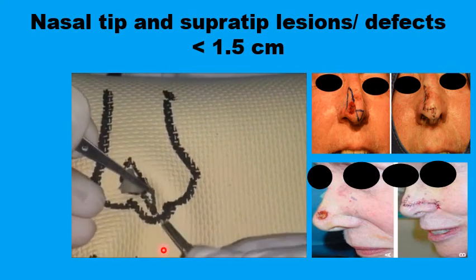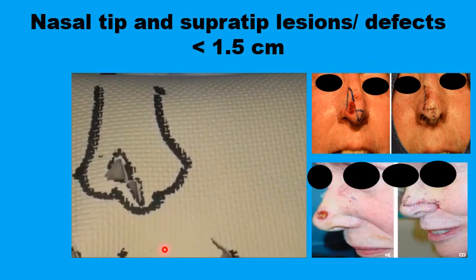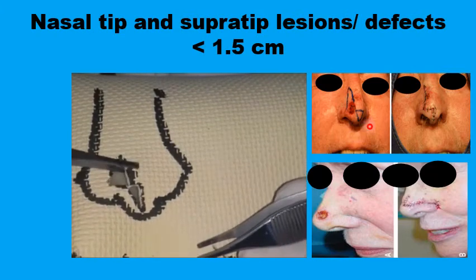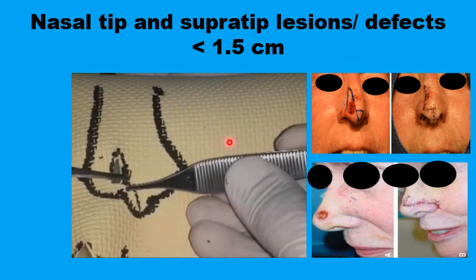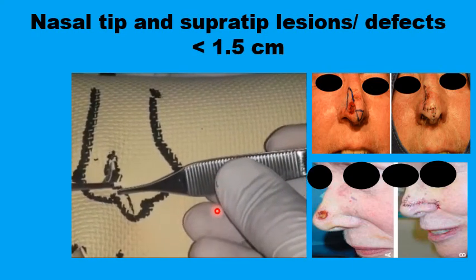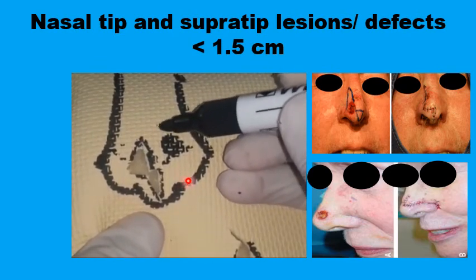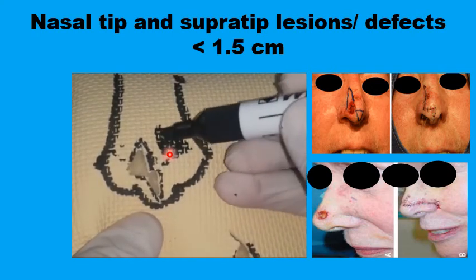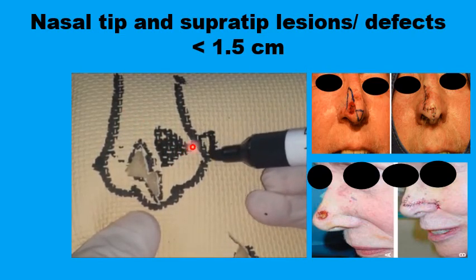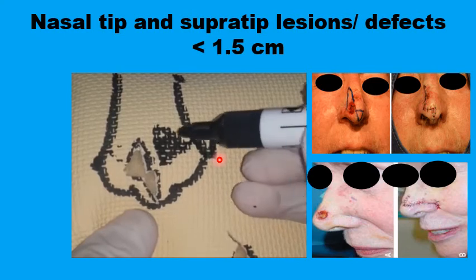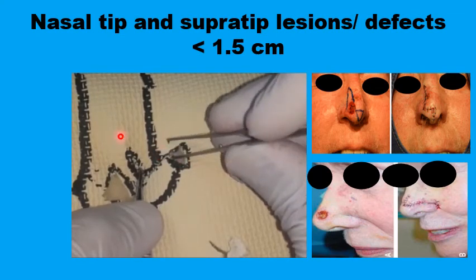Once the triangles are excised, the skin flaps can be mobilized, as shown in the picture, and you end up with a fairly hidden scar. Alternatively, for the same lesion, you can use a primary triangle pointing superiorly but obliquely, extend the base outside the nose, and place the secondary triangle outside the nose so the scar is hidden in the alar crease.